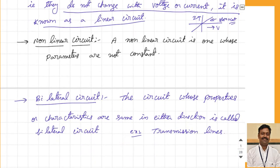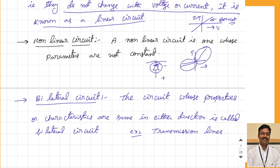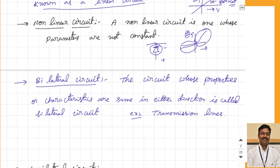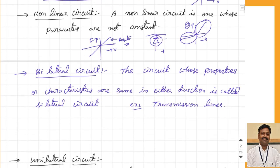In a non-linear circuit, the parameters are not constant. For example, if you take a diode — which you have studied in plus 2 — in the forward bias direction, it acts as a short circuit and gives a non-linear curve, whereas in reverse bias it acts as an open circuit. The slope is not constant, so this circuit is called a non-linear circuit. The example of a linear circuit is a resistor: as you change the voltage, the current also changes linearly — so this is called a linear circuit.